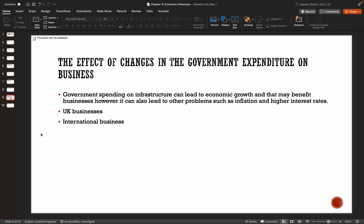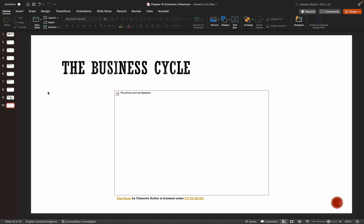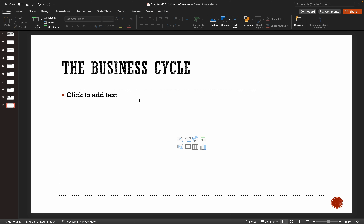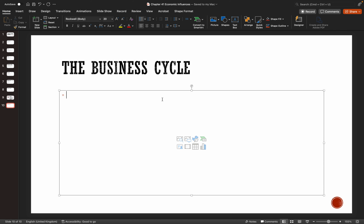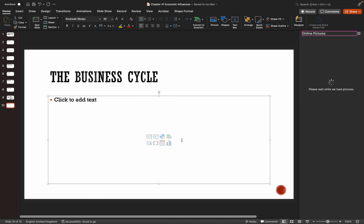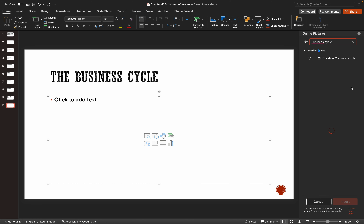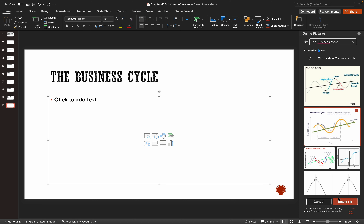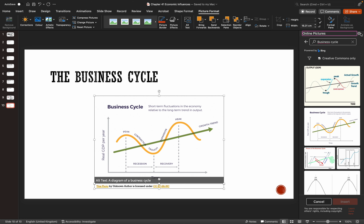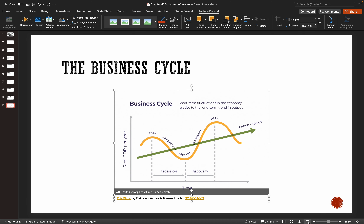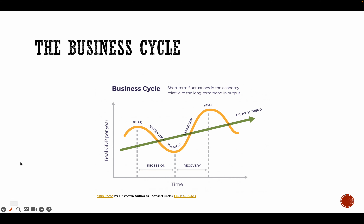The final topic is the business cycle. This is a typical business cycle diagram — it shows the cyclical nature of the economy, going up and down. A business cycle is a diagram that represents the level of output in an economy. It can also be called the economic cycle or the trade cycle.